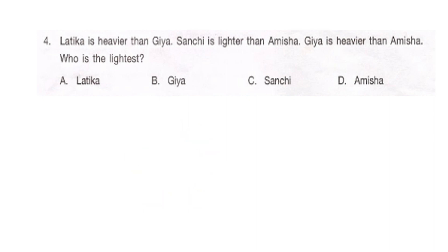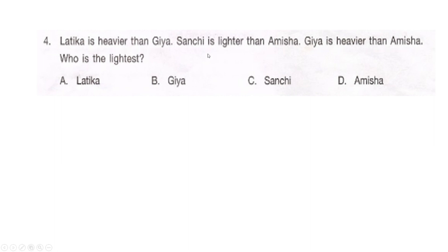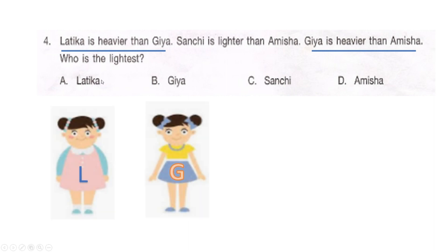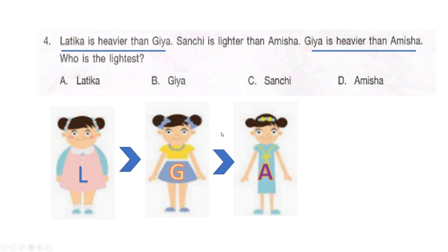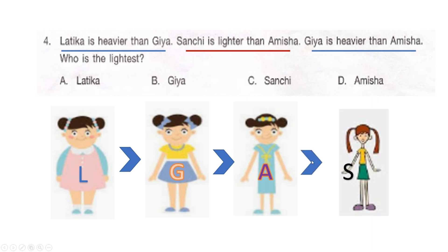It's very important to read the question carefully. From the first and last sentences: Latika is heavier than Jia, and Jia is heavier than Amisha, giving us Latika > Jia > Amisha. The middle sentence says Sanchi is lighter than Amisha, meaning Sanchi weighs less than Amisha. So the full order places Sanchi at the bottom, and the lightest is Sanchi — option C.